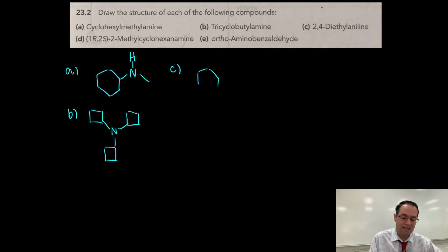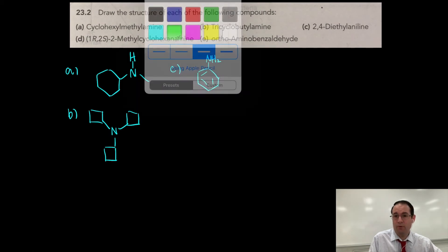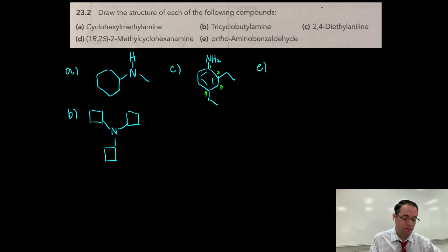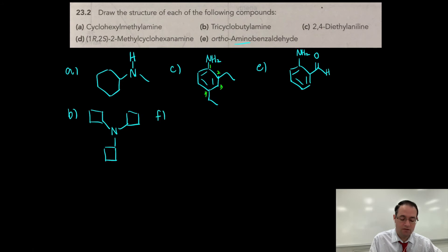In C, we have diethylaniline. Draw out aniline and stick two ethyl groups on it, but we need to know the numbers. Here's 1, 2, 3, 4 — put the ethyl group on carbon 2 and carbon 4. Whenever you have aniline, you don't have a number for the amino group because when you have a ring, it's assumed to be carbon 1. For E, amino benzaldehyde: draw benzaldehyde first, then add in the substituents. Here's the amino group at the ortho position.